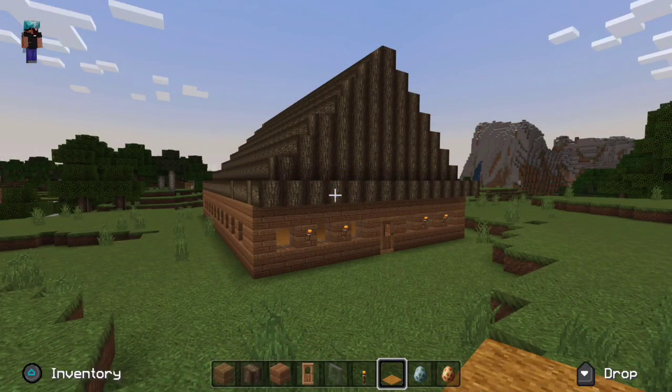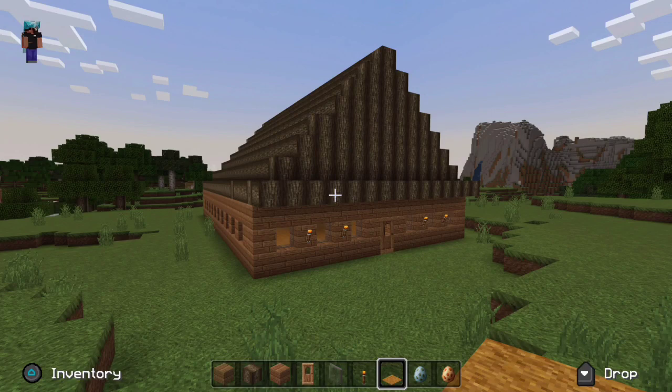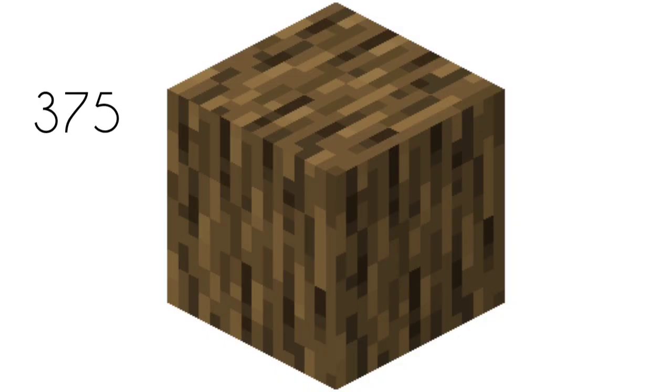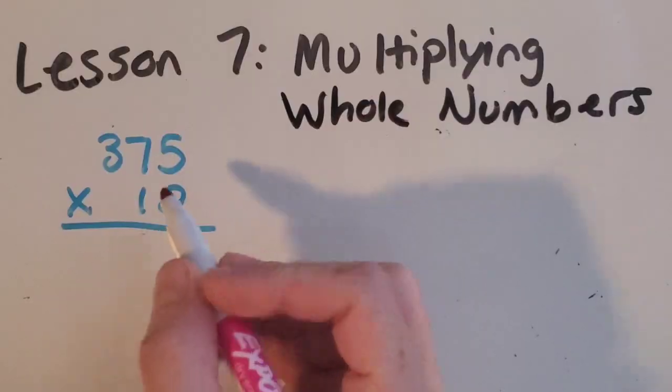So here is one of the finished cabins. Now you can help me figure out how many materials I need. So here's the oak log, and I need 375 per cabin. And I'm trying to build 12 cabins. So can you pause the video and help us figure out how many I need to make all 12 cabins? Let's check your work.